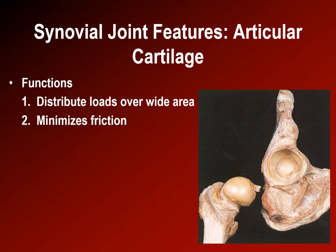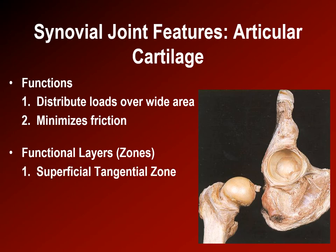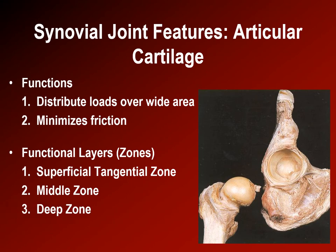The layers of articular cartilage through its thickness include the tangential zone most superficially — named for the orientation of collagen fibers running parallel to the surface. The middle zone has collagen fibers arranged to hold the matrix together like rebar. The deep zone has collagen fibers arranged to anchor the cartilage to the subchondral bone.